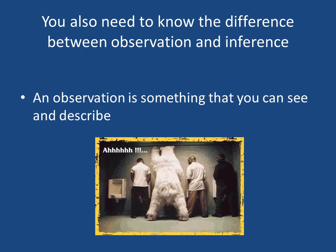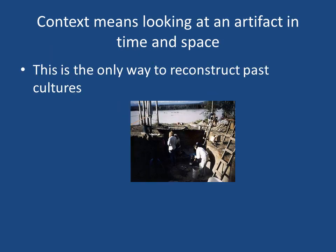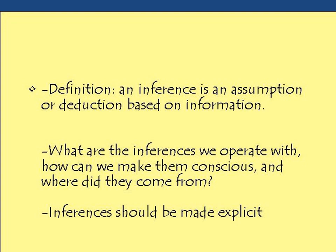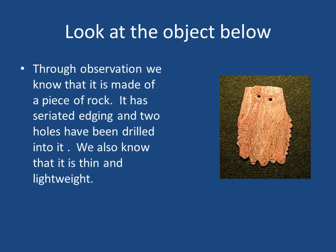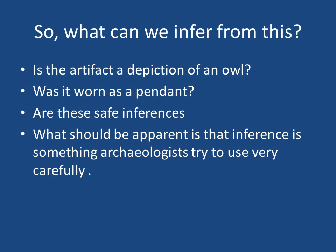Observation and inference are very important. An observation is something you can actually see and describe. An inference is an educated guess — an assumption. So if you look at an object, your observation might be: it's probably made of stone, beveled at the ends, and has two holes. An inference might be: was it an owl? Was it a pendant? Whenever you see these TV shows, a lot of what you're seeing is inference — a nice educated guess, but not 100% fact. If they just gave you observations, it would be really, really boring.